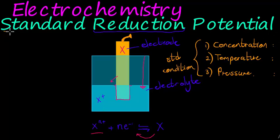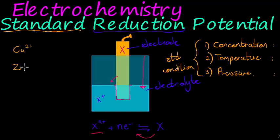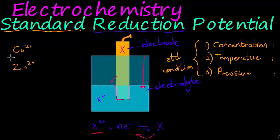We're going to compare standard reduction potential of various elements — for example, copper 2+ and zinc 2+ — measuring their ability to gain electrons against a standard. The standard we choose is called the hydrogen electrode. These two elements, copper and zinc, become very important later in electrochemistry.